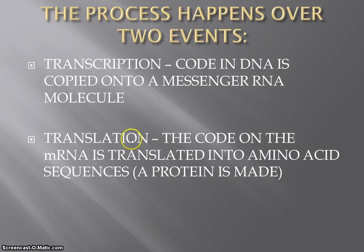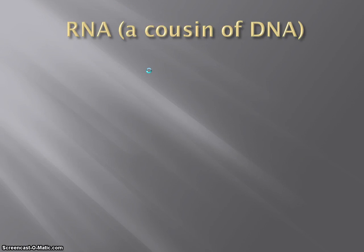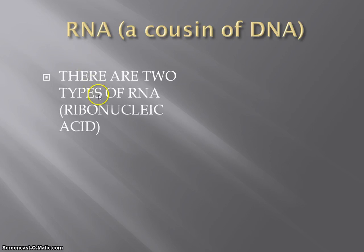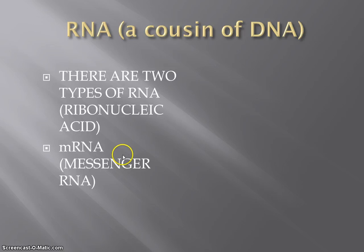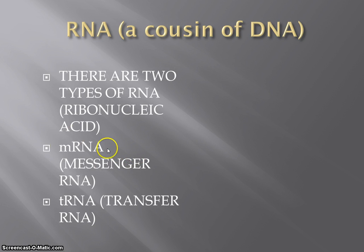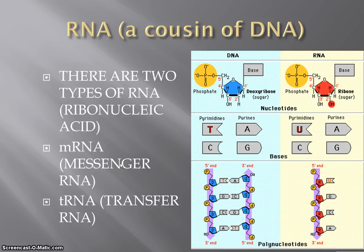In a later video, we'll look at translation — that's the second part where we'll actually build the protein, but don't worry about that for now. Right now we want to focus on just transcription. But before we can do that, we just want to take a look at what I've called this cousin of DNA — RNA. It's very much like DNA, deoxyribonucleic acid, except it's ribonucleic acid. It's chemically and structurally a little bit different. So let's look at how it's different. We're focusing just on messenger RNA here and how these RNA molecules are different.